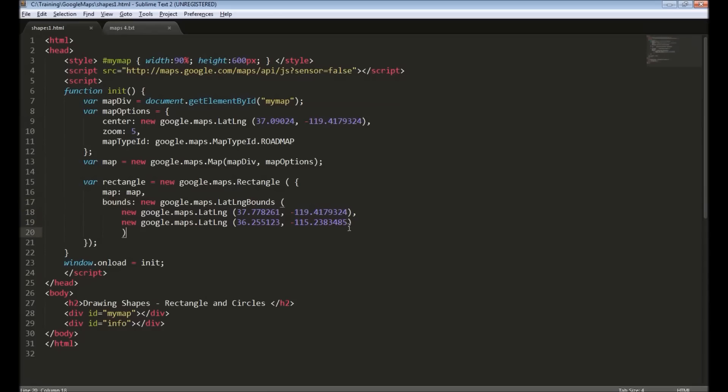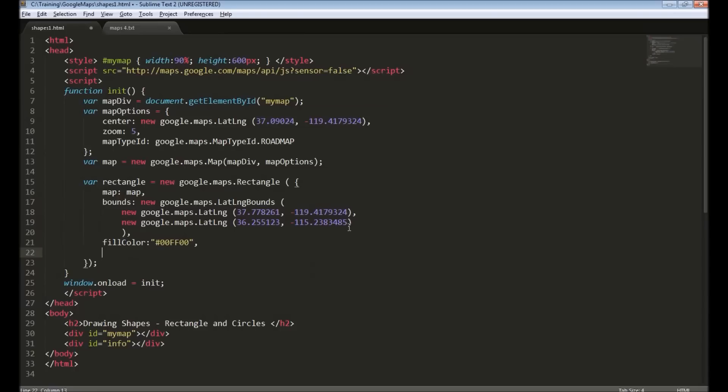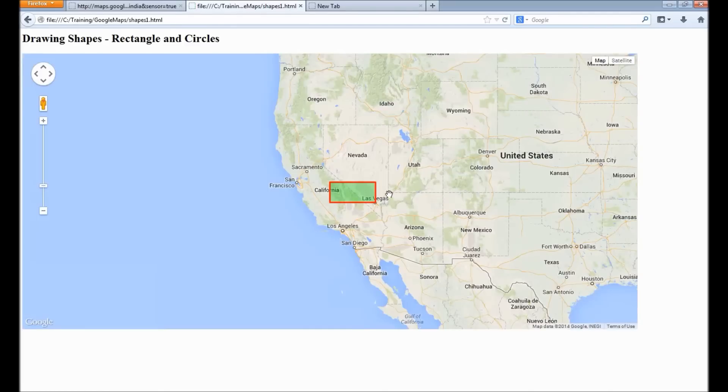By providing the fill color - you can use any HTML color code here. So I will give green for the fill color and the stroke color I will set to red. Save, reload. We will see the rectangle.